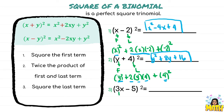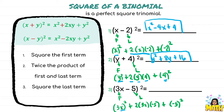For the third example, 3x is the first term and negative 5 is the last term. We square the first term: 3x squared is 9x squared. Then add twice of 3x times negative 5: 2 times 3 is 6, times negative 5 is negative 30x. Plus the square of the last term, negative 5 squared, which is positive 25. So the answer is 9x squared minus 30x plus 25.